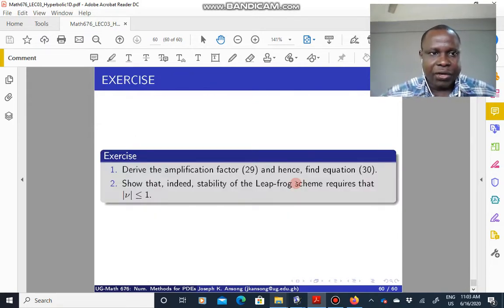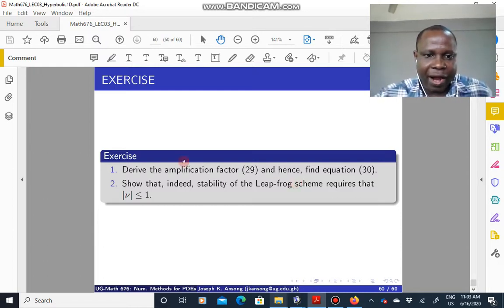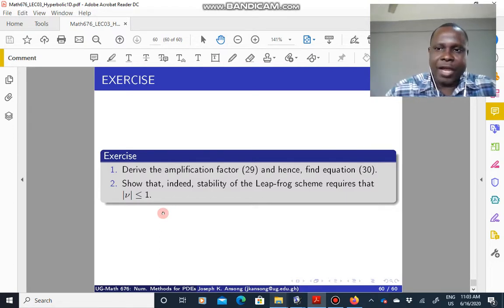So we are going to end the lecture on the hyperbolic equations. One of the hyperbolic equations here is an exercise: you can try to derive the amplification factor for the leapfrog scheme and find the modulus as well, and show that indeed the stability of the leapfrog scheme requires that mu is less than or equal to one. So this is an exercise you could try.